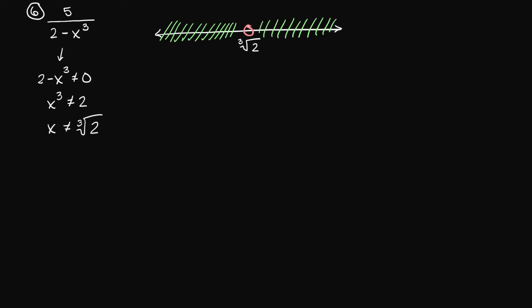So let's write this answer in interval notation. We have capital D, colon, negative infinity up to, but not including, the cubed root of 2, union, everything greater than, but not the cubed root of 2, to positive infinity.